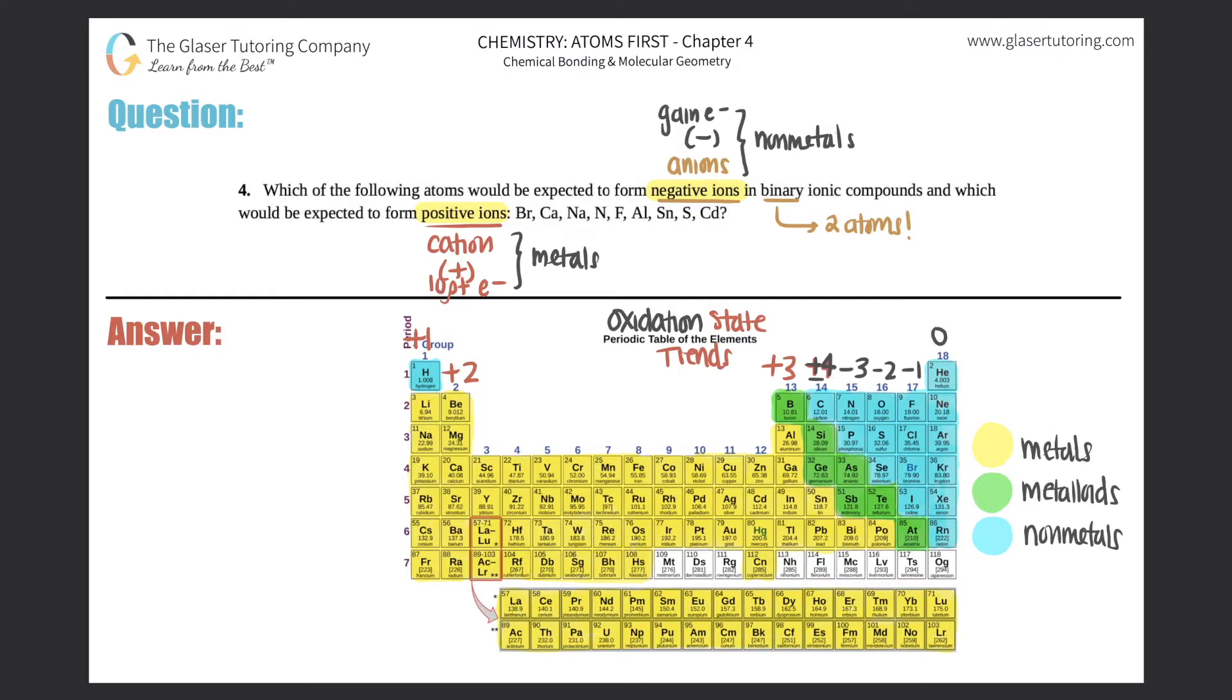The first one is bromine, Br. Bromine is over here in the negative one category and it's a non-metal, so this would form a negative ion, more specifically a negative one charge. If you had to write this when you formed a compound, it would be Br minus one. These charges always go in the top right corner. Remember, negative one means bromine had to gain one electron.